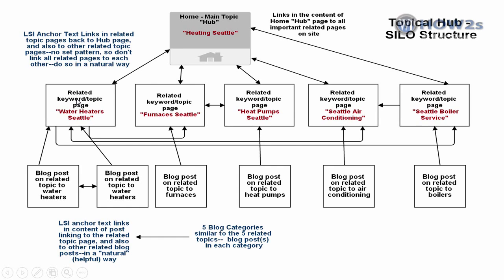You don't want to link to pages that are outside your silo. If you had a different silo on your site other than Heating Seattle, you wouldn't want to cross-link to it — keep all links within your silo. In our blog posts we're just going to link to the similar related topic page, not to other related topic pages — just the one that matches the blog category the post is in. I'll demonstrate this later in the video.